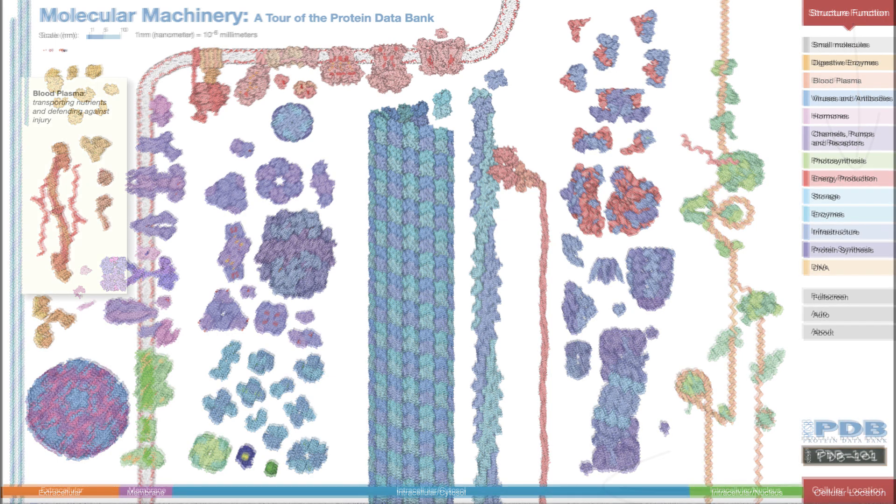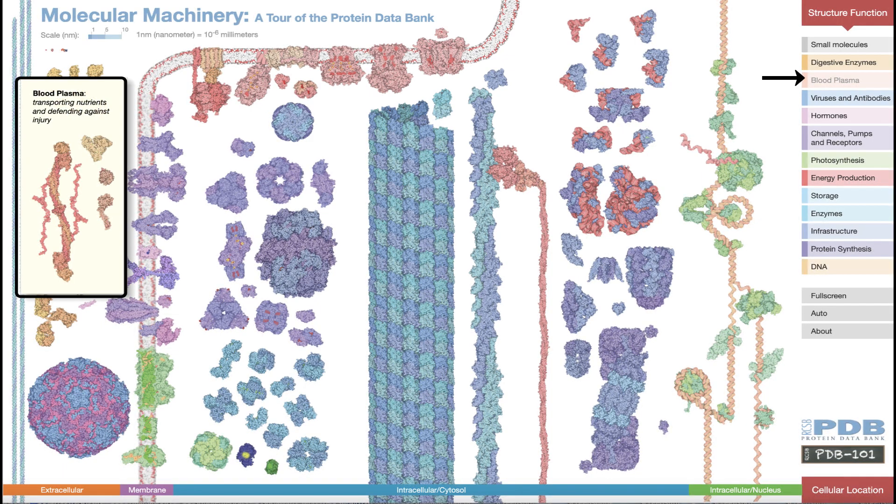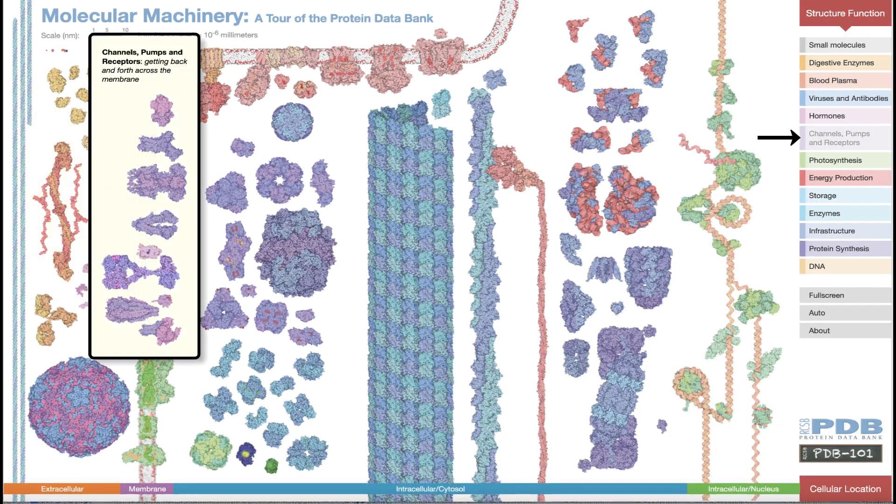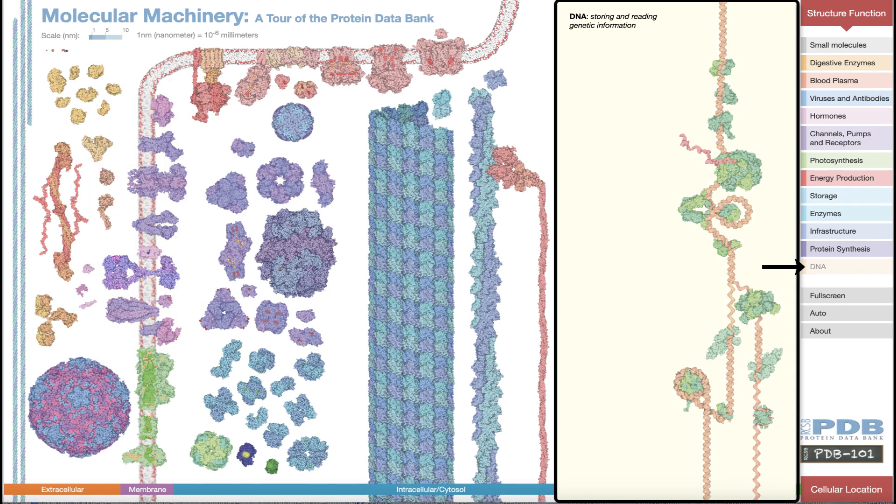For example, selecting blood plasma highlights the structures involved in transporting nutrients and defending against injury. The channels, pumps, and receptors are located on the membrane while the DNA and related proteins are mostly found in the nucleus.